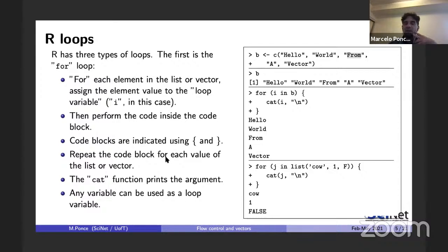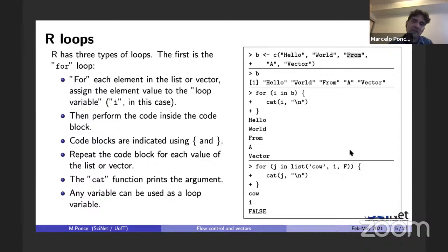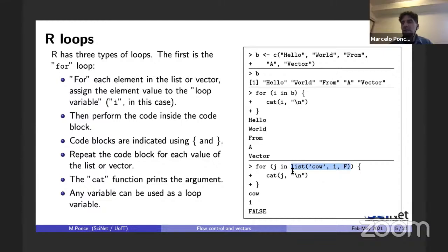Alternatively, you can loop over a list. Any enumerable data structure — lists, vectors, data frames — can be looped over. For example, for shape in a list composed of the word 'cow', the number one, and the boolean false, it will print cow, one, and false. This is the simplest case: repeating the same action over a number of elements in a set.